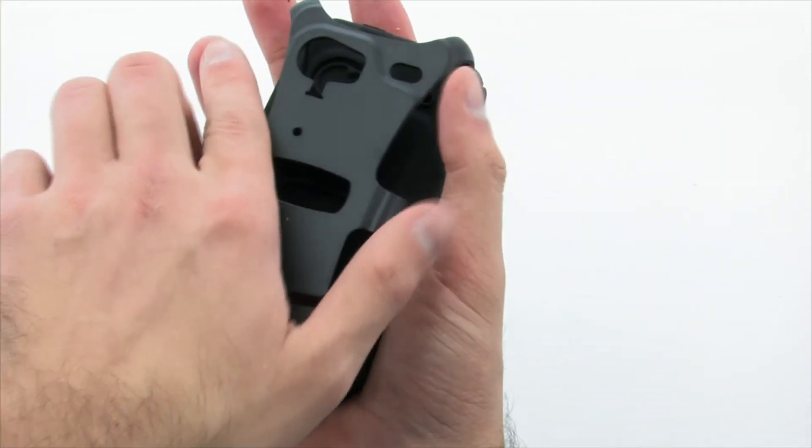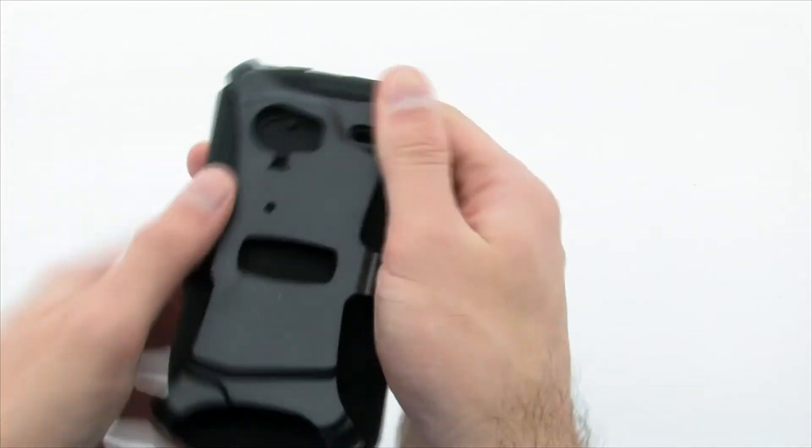The final step is to apply the exoskeleton by lining the top and pushing down the sides and corners until snug.